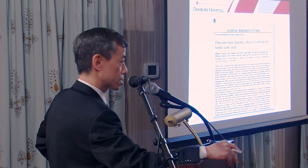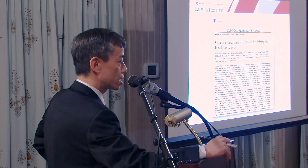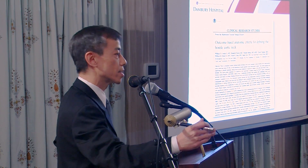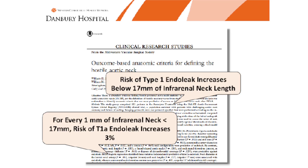The shorter the neck, the higher the risk of endoleak. Endoleak is defined as the ability of blood to get around the stent graft into the aneurysm sac. Any type of leak from the proximal portion of the stent graft means you're basically not protecting the patient from rupture. In this paper, it talks about how each millimeter matters in that proximal neck length — for each millimeter of proximal neck less than 17 millimeters, the risk of endoleak goes up significantly.